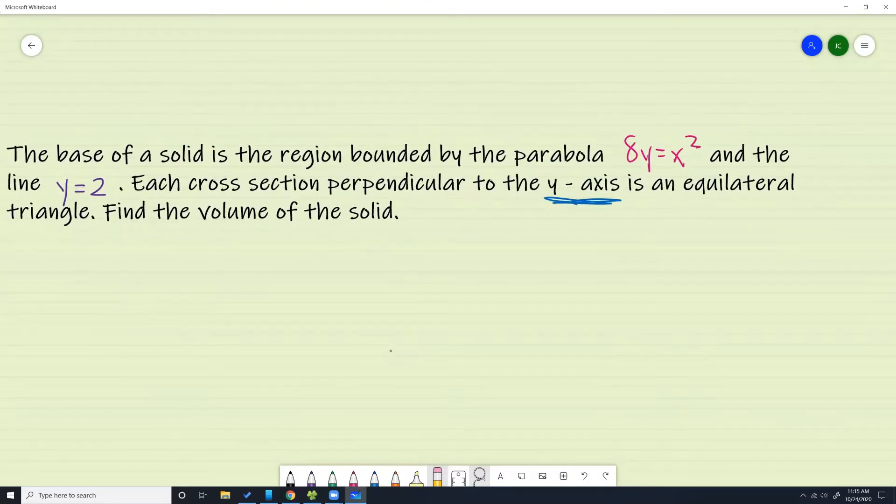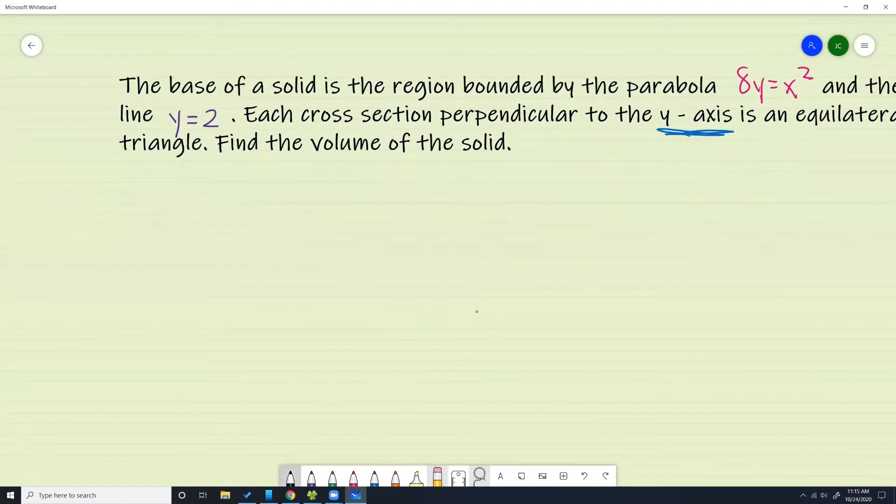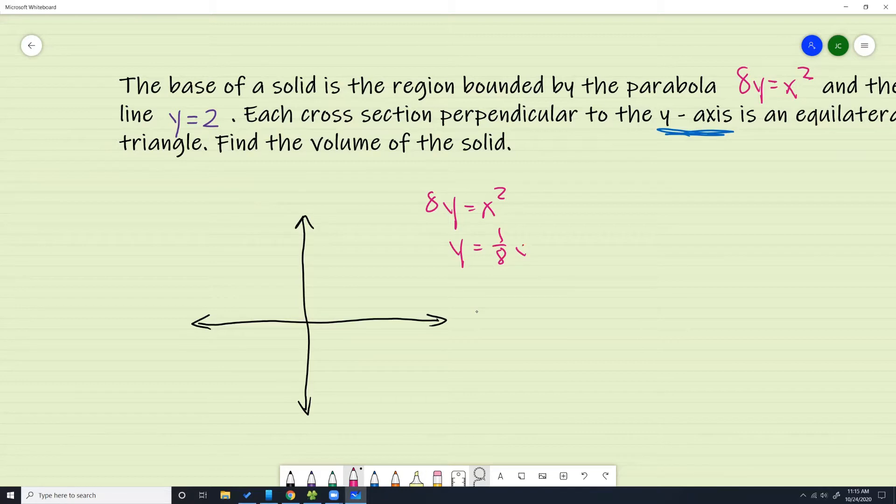Let me jump right in and give you a quick visual of what it looks like. The pink line: 8y equals x squared. I'm going to divide by 8 on both sides and end up with a parabola that's a little fatter because of the 1/8. It's also bounded by the horizontal line y equals 2.